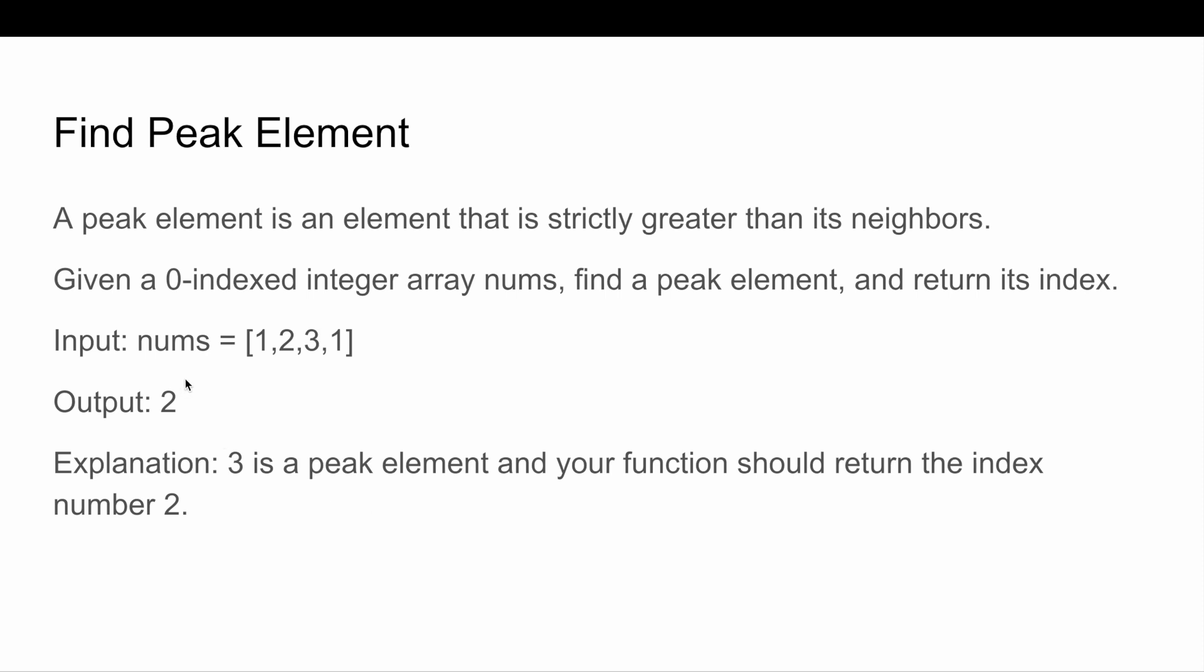You are given numbers like the input [1,2,3,1] and the output is 2. In the output you have to return the index of that number which is peak in the given array. So 3 is the peak element and your function should return the index number which is 2. If you see the input, 3 is at index 2, that's the reason output is 2, because you have to return the index, not the number.